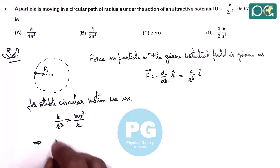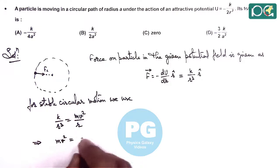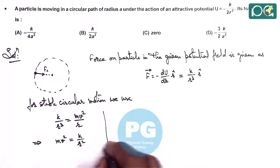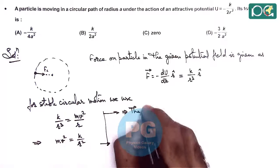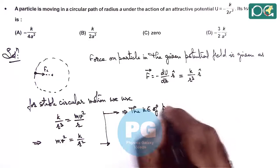Simplifying this gives mv² = K/R². We can now find the kinetic energy of the particle.